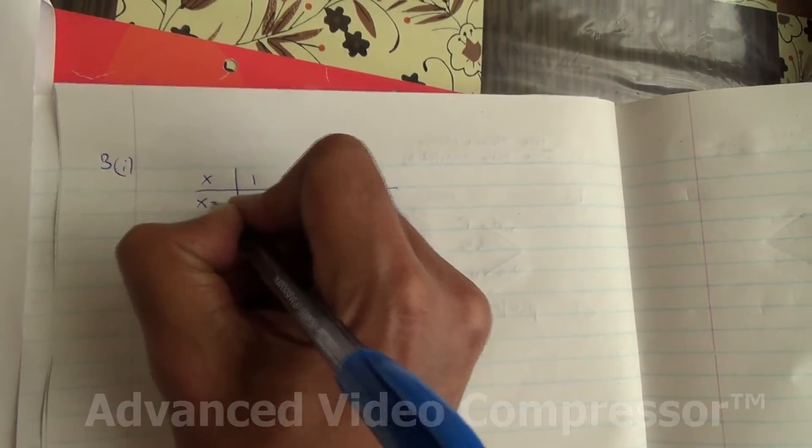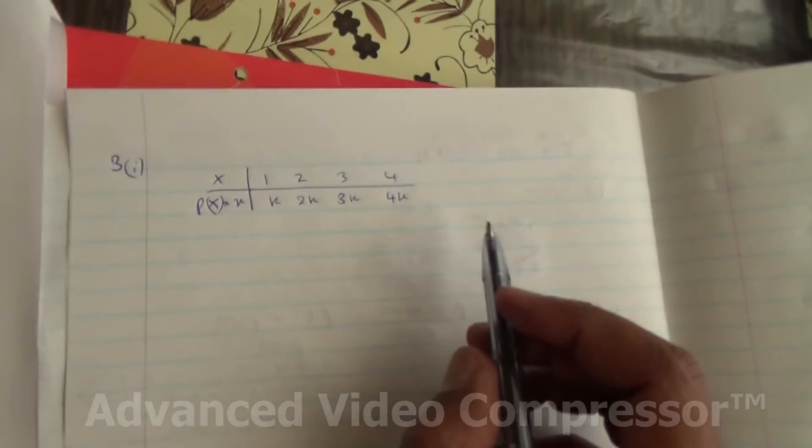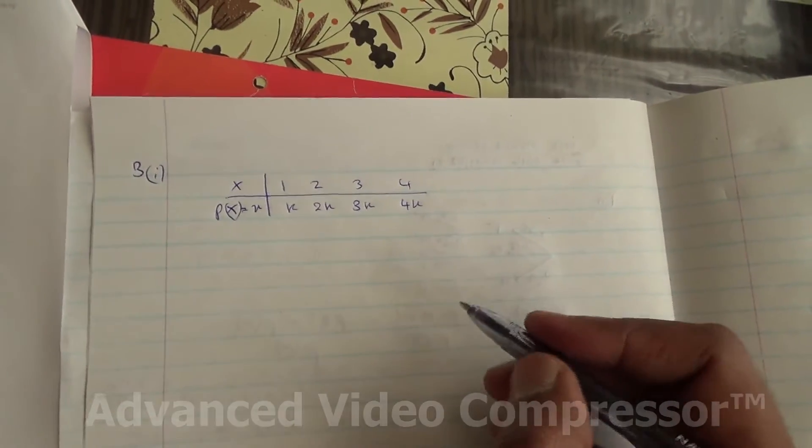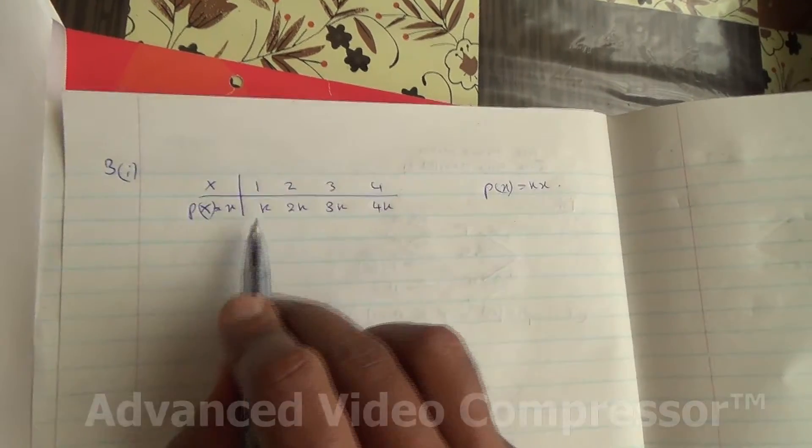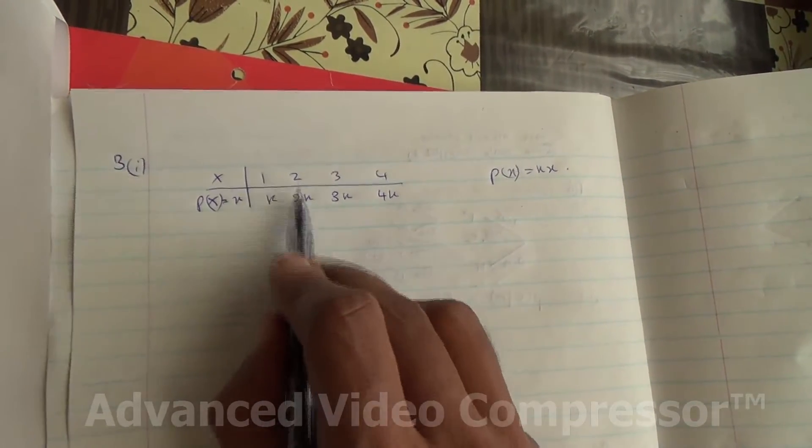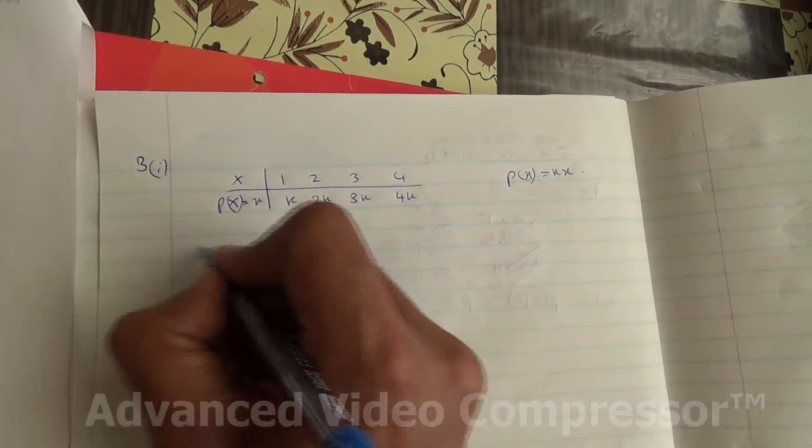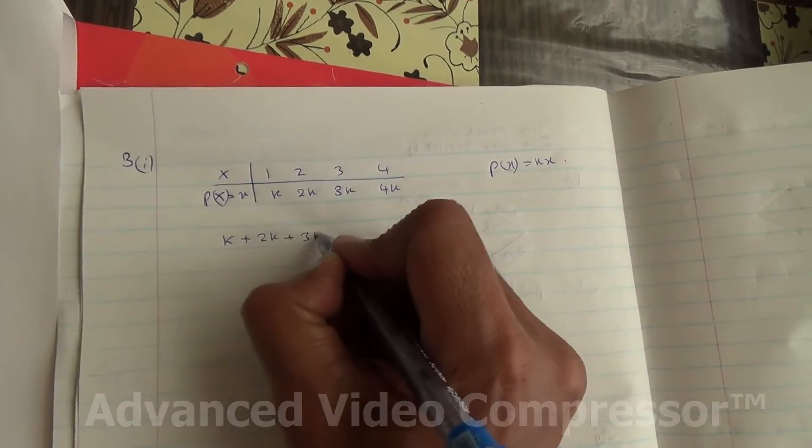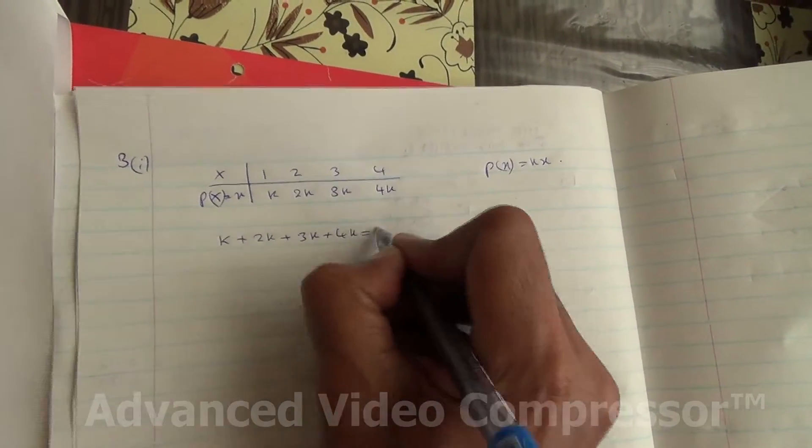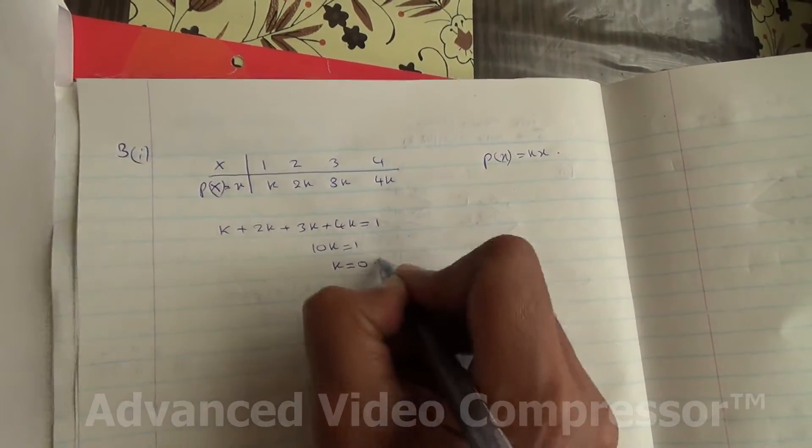X and P(X) = X. Probability of X is equal to X. We are told in the question that the probability of X is equal to KX. Probability of X is equal to KX. So that's why we did all this. KX, K times 1, K times 2, K times 3 and so on. Now we need to find the value of K. We should know that the total probability is always 1. So add those up and say it is equal to 1, we're going to end up with 10K is equal to 1, therefore K is equal to 0.1.